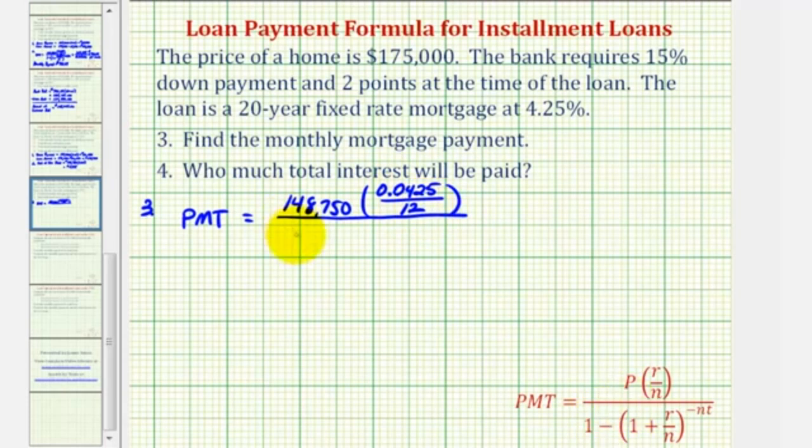And then for the denominator, we'll have one minus the quantity one plus R divided by N, which again is 0.0425 divided by 12, raised to the power of negative N times T, which would be negative 12 times T, which is the time in years. This is a 20 year fixed rate mortgage, so T is 20. Now let's go to the calculator to evaluate this, and we'll determine the numerator and denominator separately to help us simplify this.